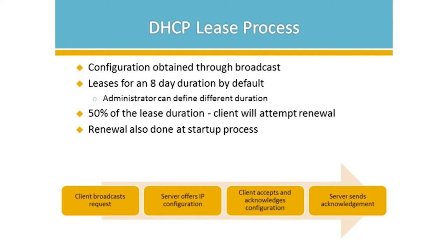What happens with this lease process is every time the client reboots, it looks for the default gateway. If it can't find it, it will resume the entire renewal process again even if the lease is not up. The reason for this is that many computers like laptops or mobile devices move from network to network, so if you reboot it, it realizes by the gateway that it's no longer on the same network and starts the whole process again. Halfway through the lease — at 50% — the client will attempt to renew, then again at 87.5%, and of course when the whole lease expires it goes through the whole process again assuming it hasn't automatically renewed.